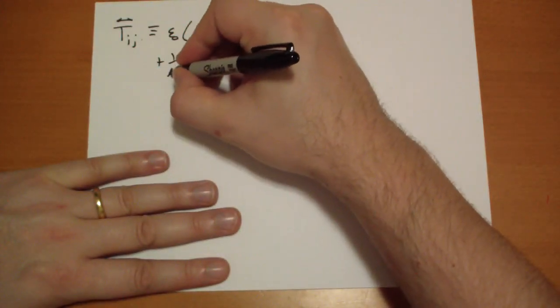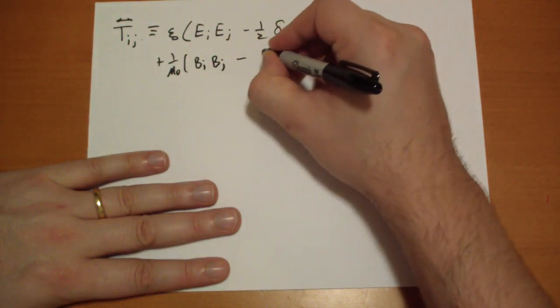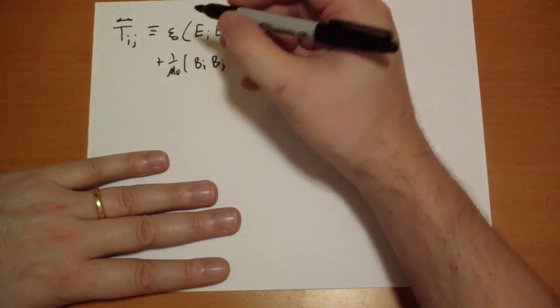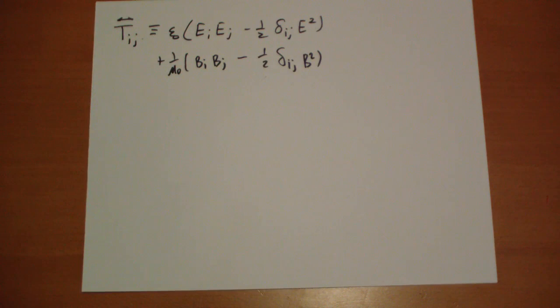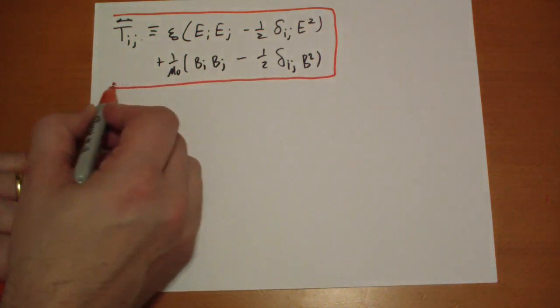Plus 1 over mu-knot. Would you believe it? B I B J minus 1 over half Kronecker delta I J B squared. And that's it. That's the Maxwell Stress Tensor. This is the entire tensor. Every single one of the terms can be derived using this simple formula.